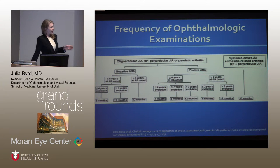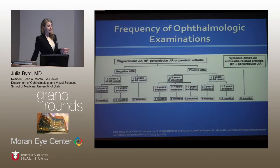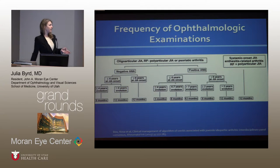There are screening guidelines for when these kids need to be seen. The important things to remember are that oligoarticular JIA, RF-negative polyarticular JIA, and psoriatic arthritis are the categories where they may need to be seen more frequently. A positive ANA and a diagnosis at less than six years of age puts them in the higher risk category, and a kid who's had the disease for less than four years needs to be seen every three months — which is the category our patient fell into when he first presented.